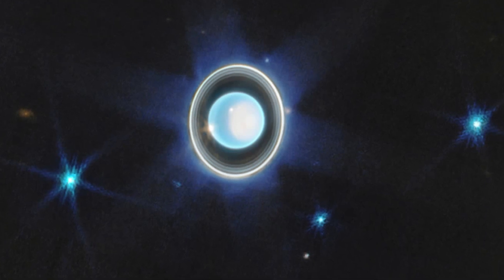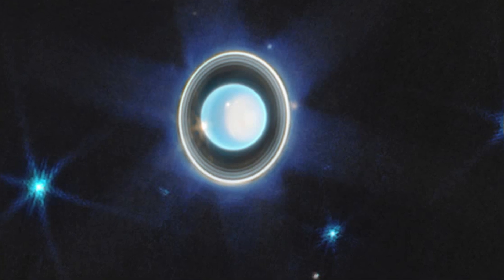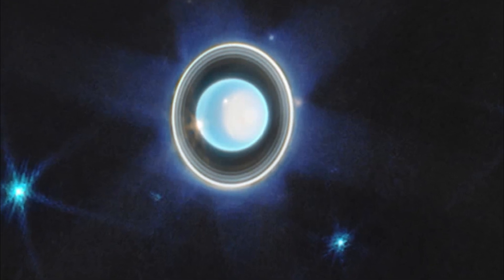Additionally, the telescope successfully imaged several of the planet's 27 known moons, revealing even some small moons nestled within the rings.